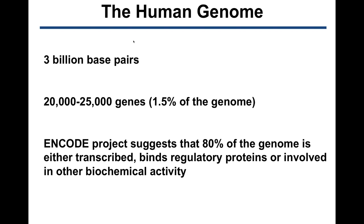If you look at the human genome, it is a large macromolecule that contains 3 billion base pairs. There are approximately 20,000 genes that occupy 1.5% of the genome. The rest of the genome is biochemically active and likely has a regulatory and structural role. From a clinical standpoint, it is difficult to interpret genetic variation outside of the known genes, meaning that at this point we can only interpret at most 1.5% of our genome.